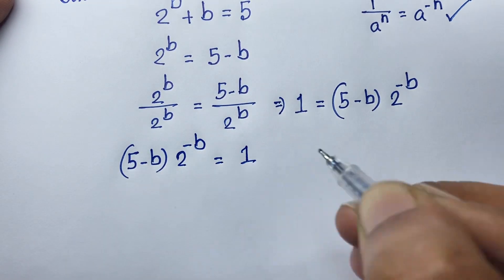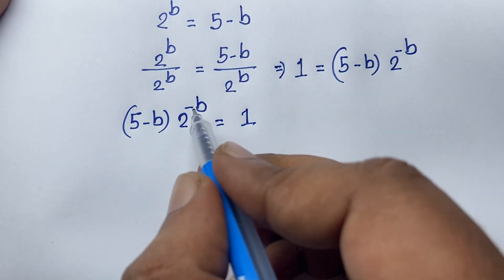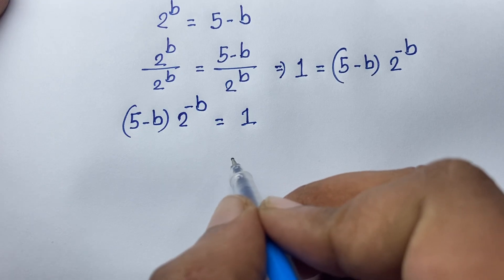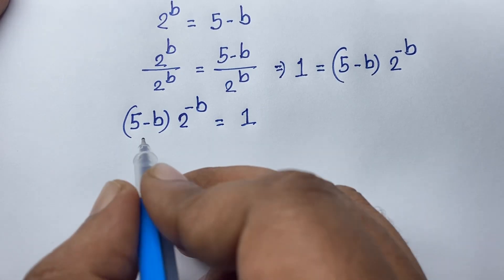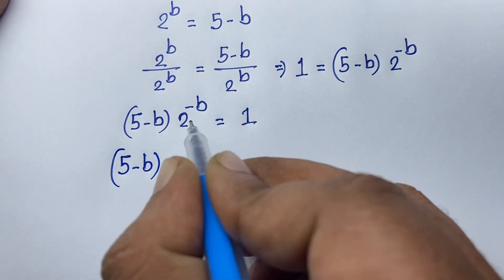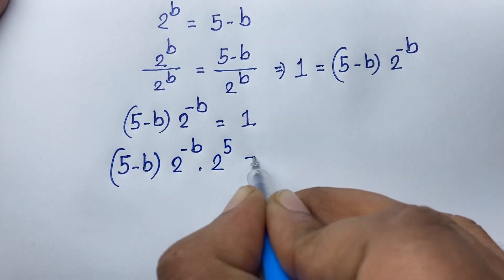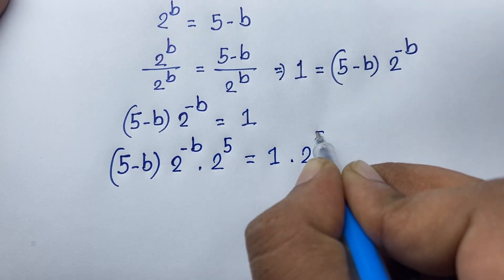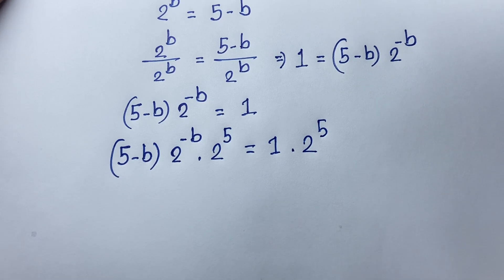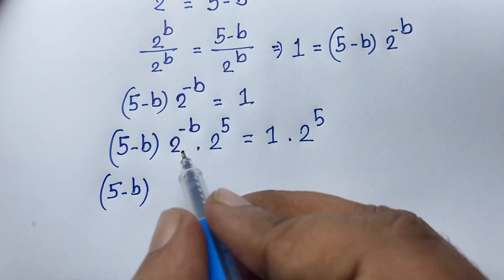Now at this moment I want to use the Lambert W function. To apply the Lambert W function, I multiply both sides by 2 to the power 5. So the expression becomes (5 minus b) times 2 to the power minus b times 2 to the power 5 is equal to 1 times 2 to the power 5.